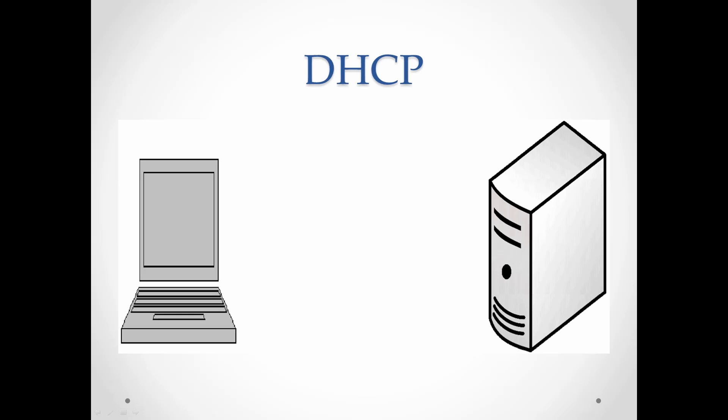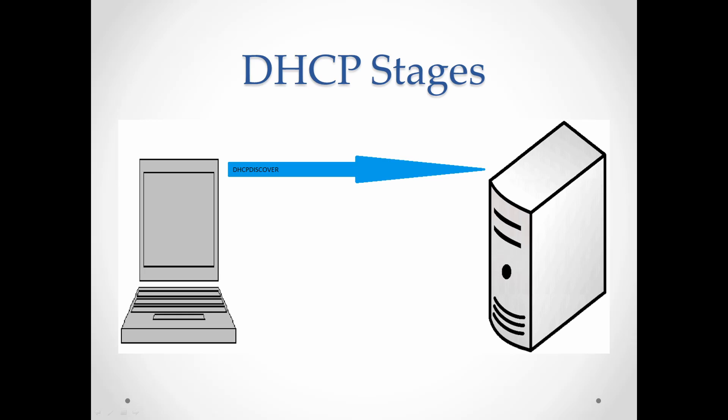DHCP works in a client-server mode. When a computer needs an IP address, it begins a four-step process to obtain that IP address and begin the lease. Since the computer does not have a valid IP address yet, it will flood the network with a broadcast to look for a DHCP server - this is known as DHCP Discover. The DHCP server receives the DHCP Discover message, reaches into its magical IP address bag, and reserves an available IP address to pass along to the computer, then sends out a DHCP Offer message back to the client.